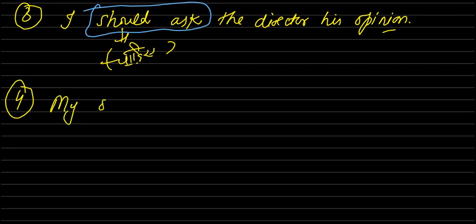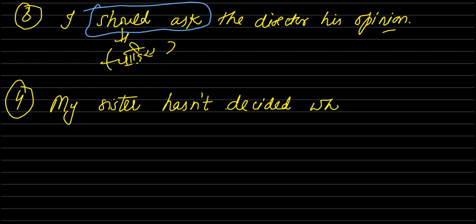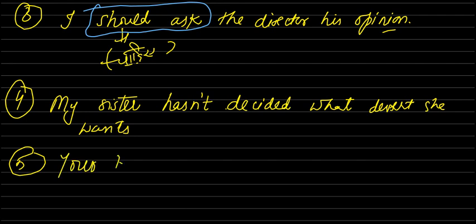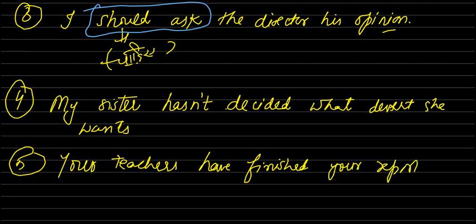Fourth example: 'My sister hasn't decided what dessert she wants.' Here 'has not decided' is the verb phrase used as the predicate of the sentence.